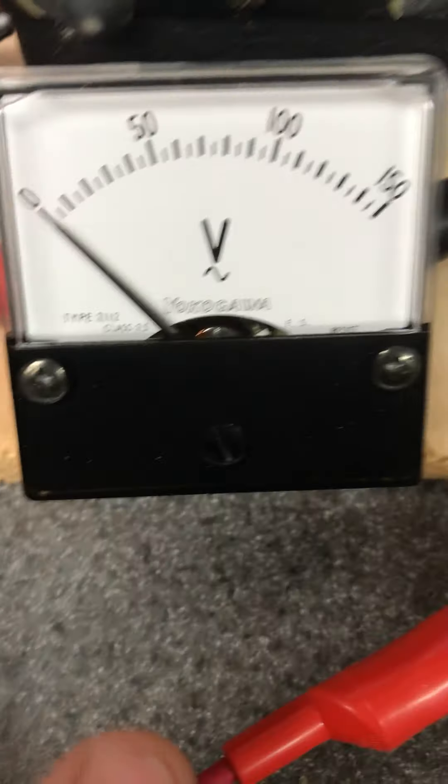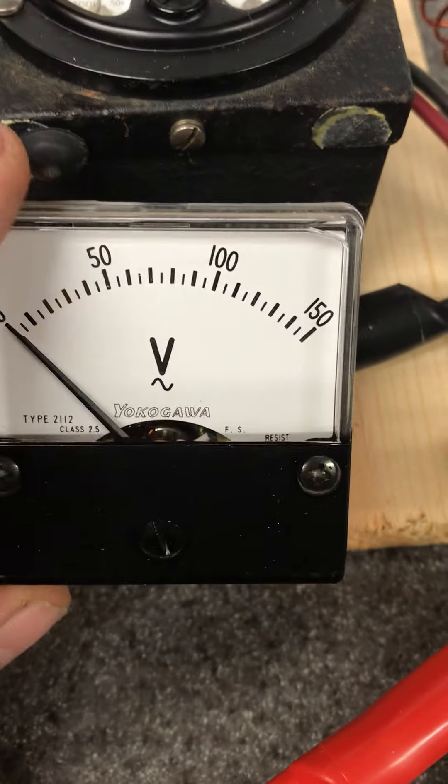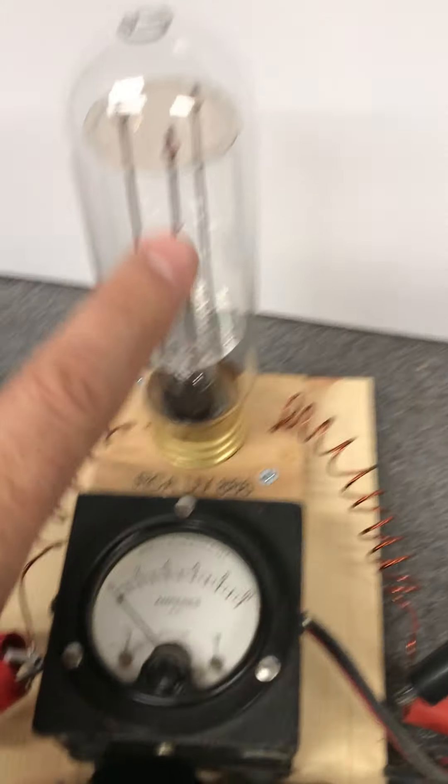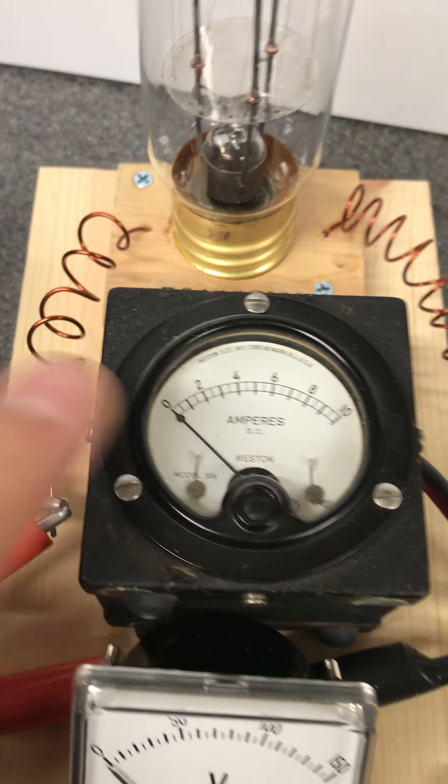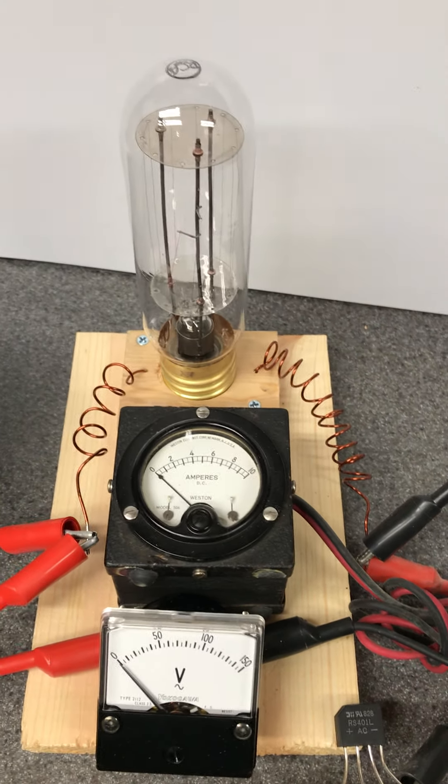So the output of the rectifier bridge goes through the current meter and through the bulb, and we're going to watch current. And then this volt meter that I scavenged out of something is right across the device. So that volt meter gets right across the device, so we will see the voltage drop across the bulb or the regulator and we'll be able to monitor the current through it.